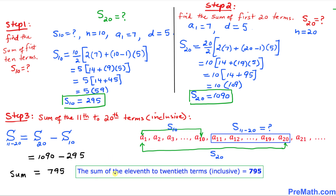The sum of the 11th to 20th terms inclusive is 795, and that is our answer. Thanks for watching, and please don't forget to subscribe to my channel for more exciting videos.